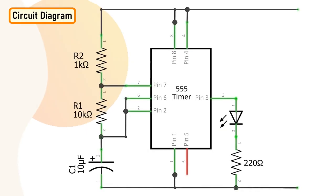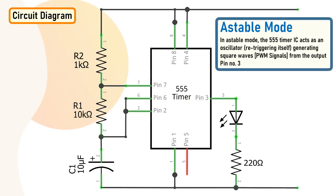The circuit is very simple. By connecting pin number 2 and 6 of the 555 timer IC, we put the IC in an astable mode. In astable mode, the 555 timer IC acts as an oscillator, re-triggering itself generating square waves at pin number 3.